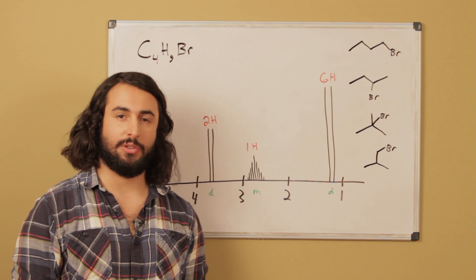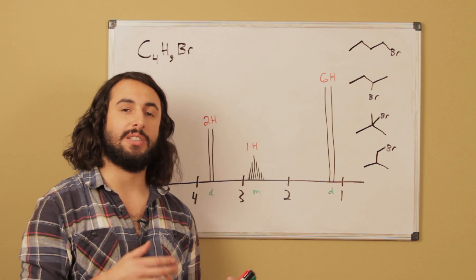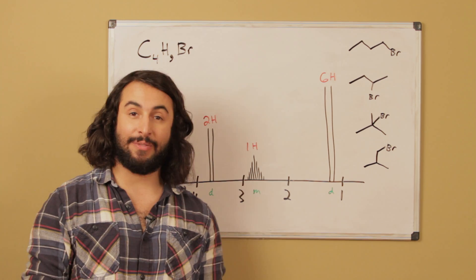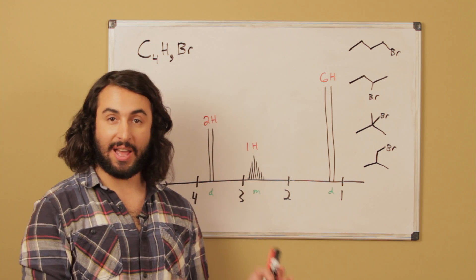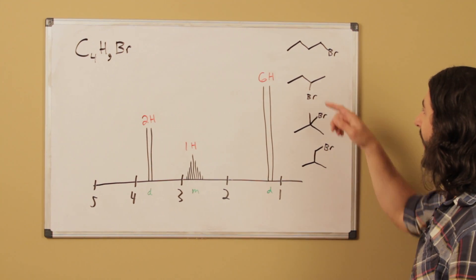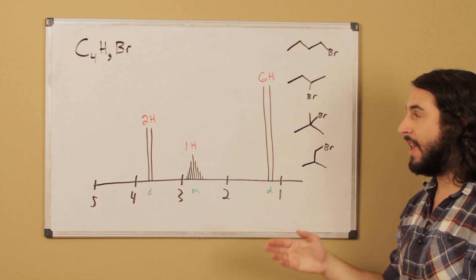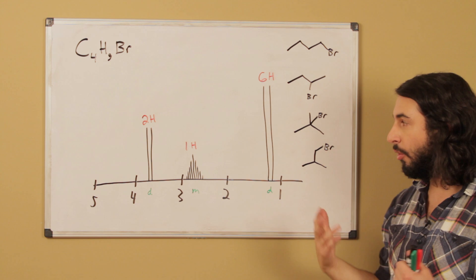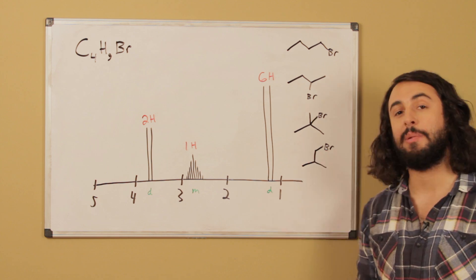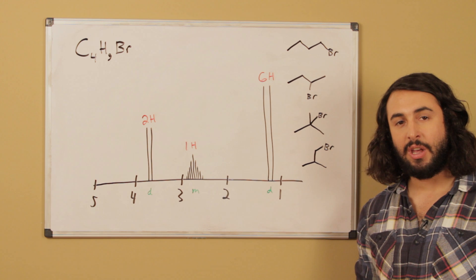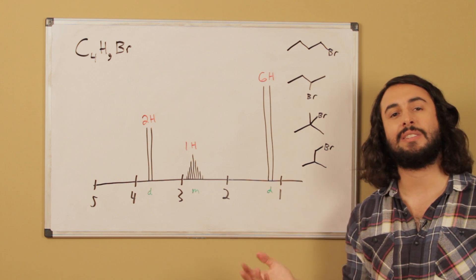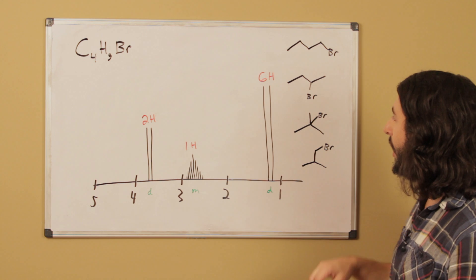Analyzing NMR spectra can be pretty tricky, but when we're trying to select a structure based on an empirical formula, there are a couple of approaches. One is to simply write every possible structural isomer for that empirical formula. For C4H9Br, we can have the straight chain of four carbons with bromine on a primary or secondary carbon, or we can have the four carbons branched with bromine on the tertiary carbon or on one of the primary carbons on the edge. There are only four structural isomers for this empirical formula.